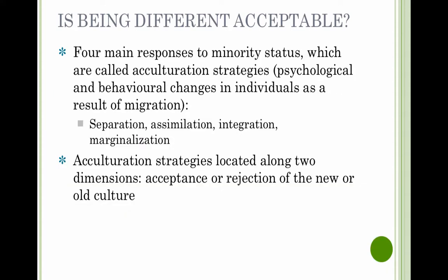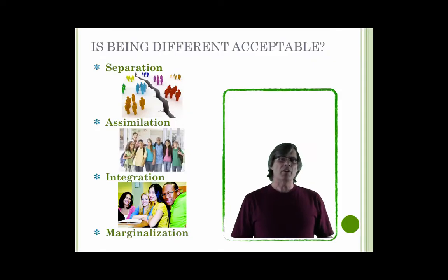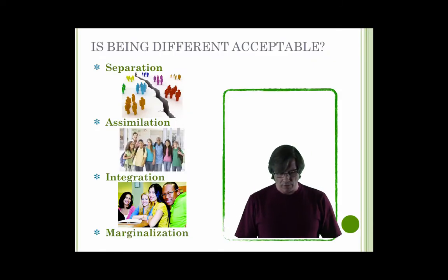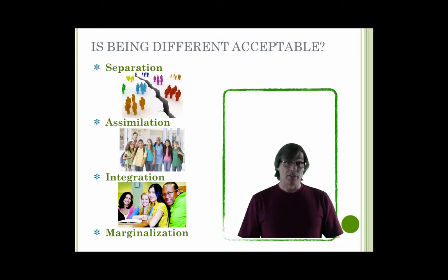When we look at being different, there are four primary minority statuses — called acculturation strategies. Minority groups are less powerful even if not fewer in numbers, with a dominant group that holds control. We're going to look at separation, assimilation, integration, and marginalization.